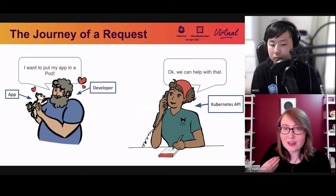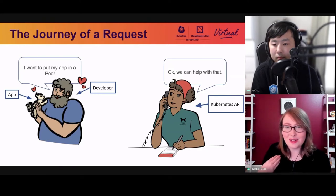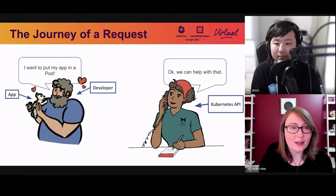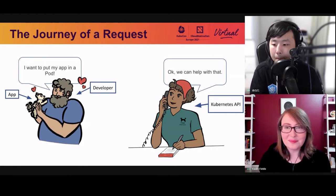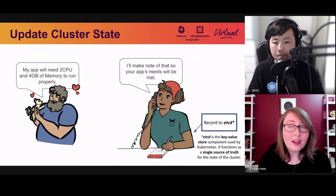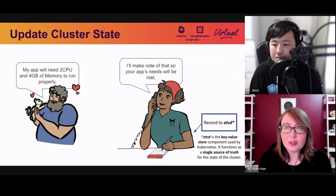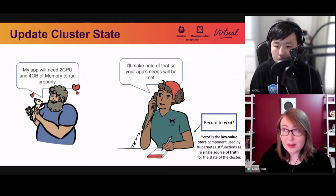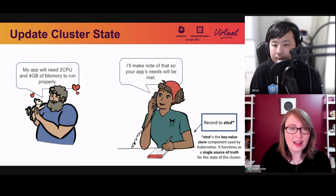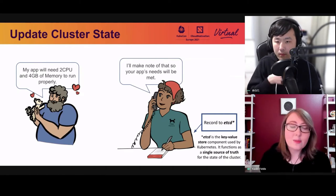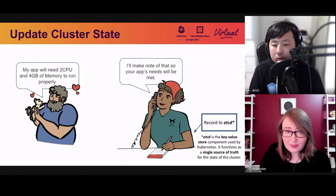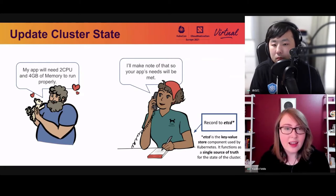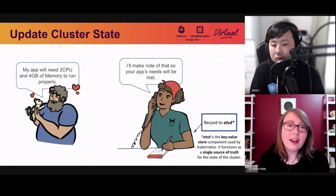Requests are used by Kubernetes for planning — like planning how much space the doggy daycare needs. You as the developer know your app needs two CPU and four gigabytes of memory to run properly. Kubernetes makes a note of the app's needs to ensure they'll be met once the application is running, and it does that by recording to etcd. etcd is the key-value store component used by Kubernetes, functioning as a single source of truth for the entire cluster.